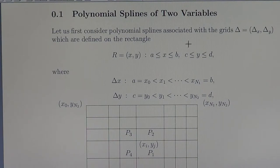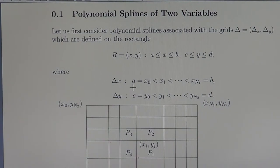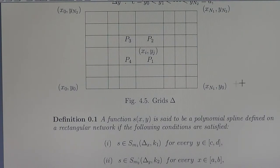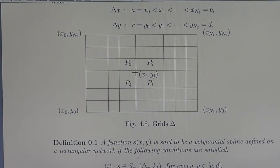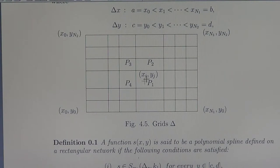Let us first consider polynomial splines associated with the grids delta, delta_x, delta_y, which are defined on the rectangle capital R with sides AB and CD. Delta_x is the partition of the interval AB, delta_y is the partition of the interval CD. At the grid node x_i, y_j, we have neighboring small rectangles P1, P2, P3, P4, forming a partition of the rectangle.